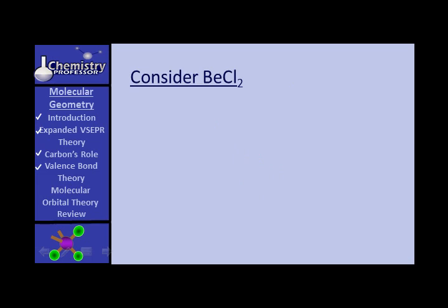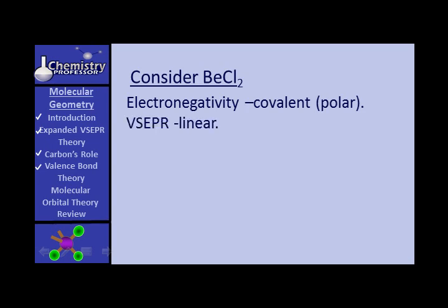Let's look at BeCl2, beryllium chloride. Electronegativity suggests that it's covalent. VSEPR predicts 2 bonding pairs plus 2 from the lone pairs divided by 2 — it predicts that it's going to be linear. Let's look at the electron configuration of beryllium.